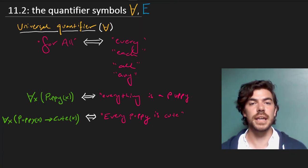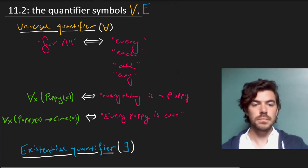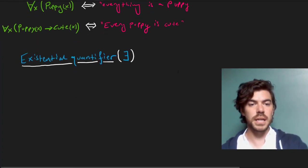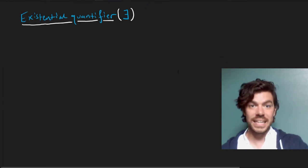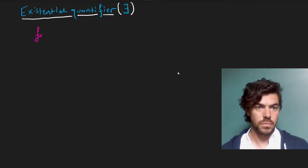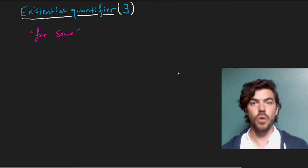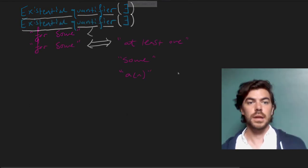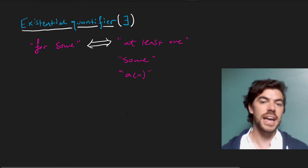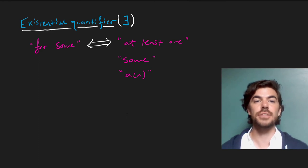The next quantifier is the existential quantifier. The existential quantifier allows us to make claims about some or at least one item. We express it as for some, as we did with for all, for all x, with the universal quantifier. And it's equivalent with the English phrases at least one, or some, or an, in the sense of the indefinite article.